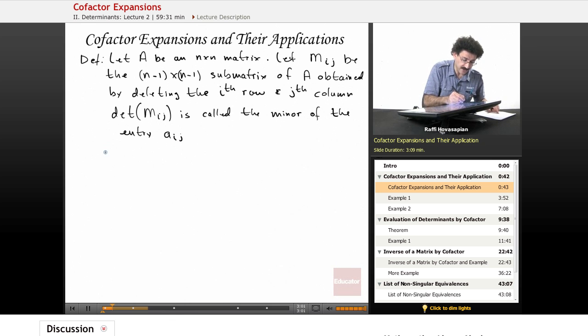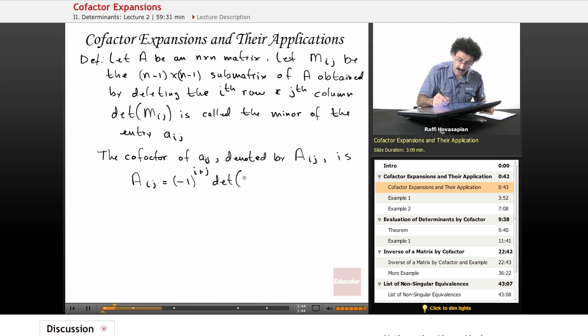One more definition. The cofactor of A sub ij, which we denote capital A sub ij. So, cofactor, we use the capital. Minor, we use the M. is the following A sub ij equals negative 1 raised to the power of i plus j times the determinant of M sub ij. Okay, don't let all these subscripts and i's and j's and negative 1's scare you.